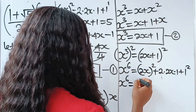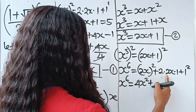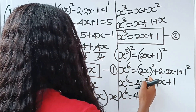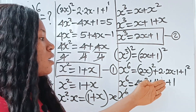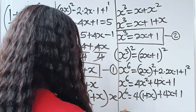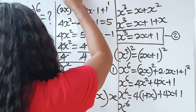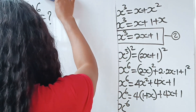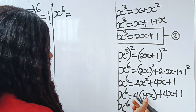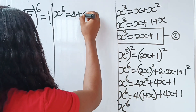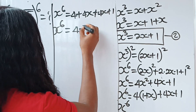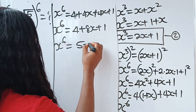So x⁶ = 4x² + 4x + 1. Now recall that x² = 1 + x, so substitute: x⁶ = 4(1 + x) + 4x + 1 = 4 + 4x + 4x + 1 = 5 + 8x. Therefore x⁶ = 5 + 8x.